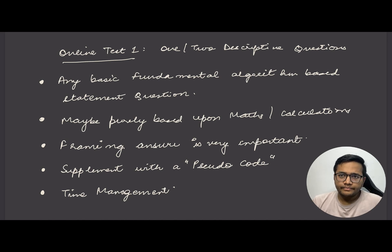For the online test, there will be one or two descriptive questions. Last year you got a statement and needed to describe your answer in words with pseudocode in some cases. Any basic fundamental algorithm-based statement question—whether searching, sorting, anything from the basics—they might frame a statement and you need to evaluate which algorithm to use and how to solve it in least time complexity and space complexity. Some questions were purely based on maths or calculations, not related to coding. It depends on your luck what type of question you get.